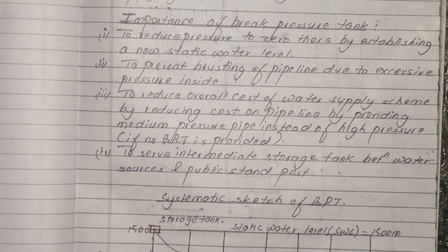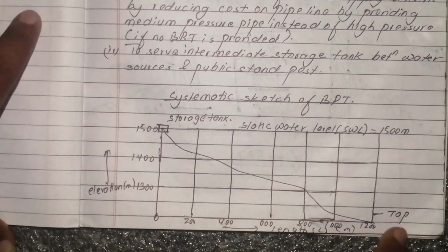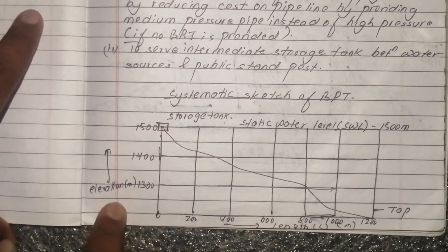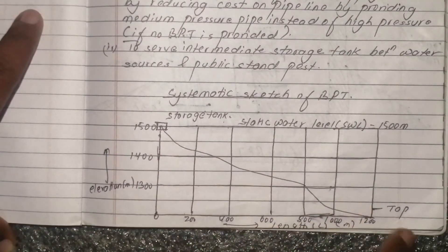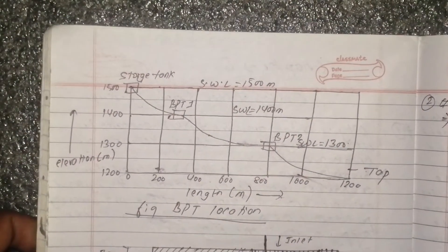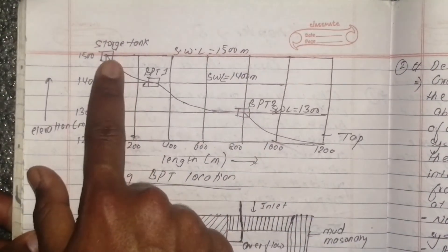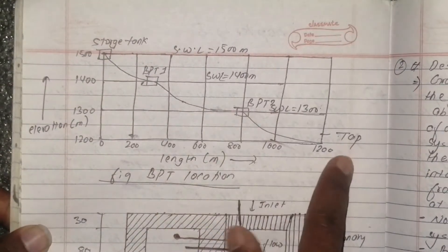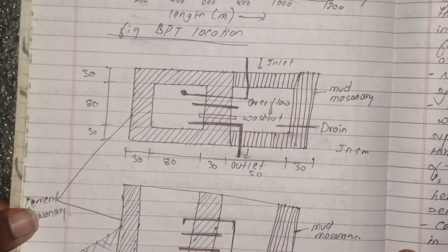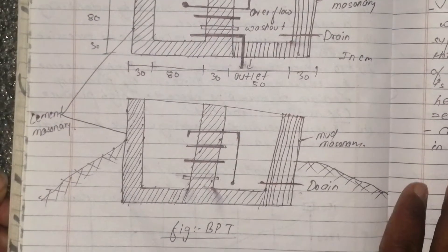Now, the systematic diagram of the Break Pressure Tank is shown. The figure includes elevation, length, and top details. You can see Break Pressure Tank 1, Break Pressure Tank 2, and Tap 2. The plan and section of the break pressure tank are also shown — including the plan view and the section view.